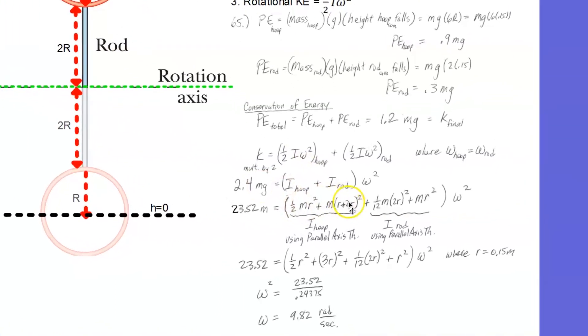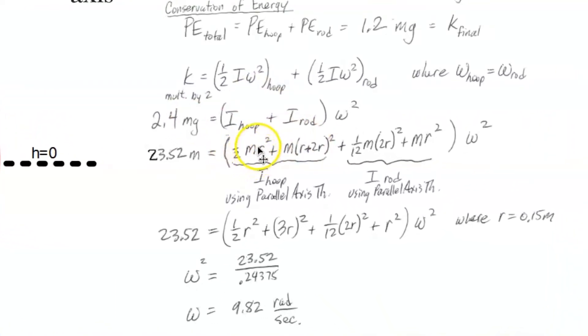So here's the parallel axis theorem: I_com plus m h squared. We decided for the hoop, h is 3r. And we decided for the rod, it's just r.